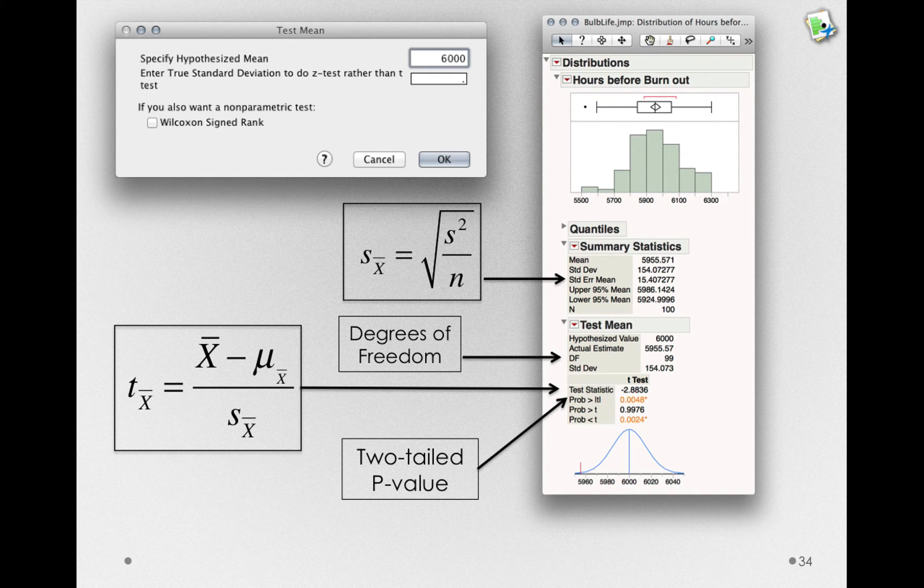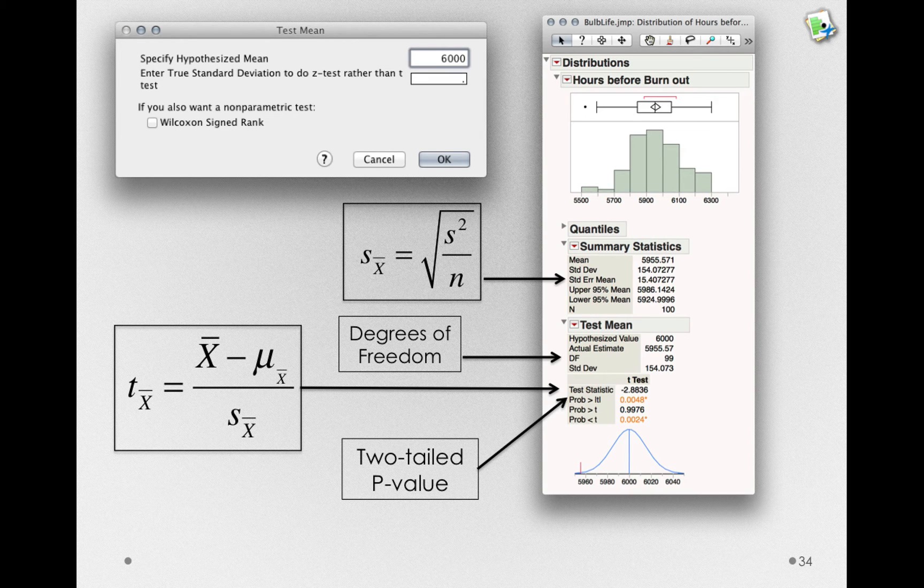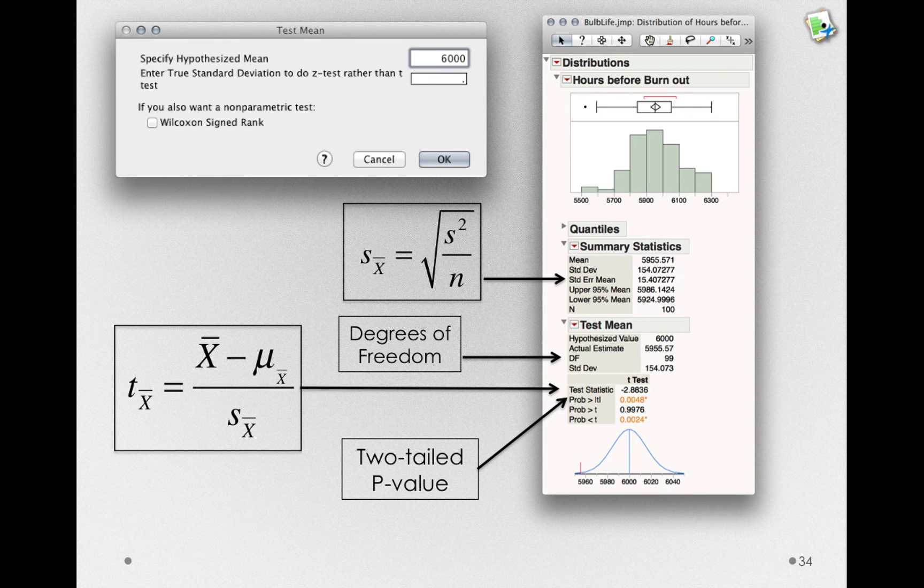In this case, we can see that the probability of randomly sampling bulbs that would show this amount of effect, or more, would be relatively unlikely if the null hypothesis were true. Another way of saying that is, if these bulbs actually did, on average, last 6,000 hours, it would be unlikely we would get this difference from 6,000.